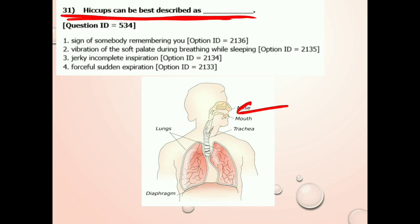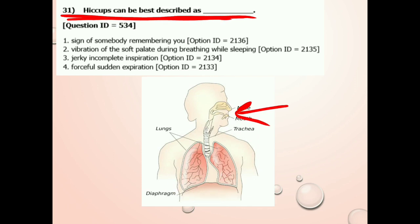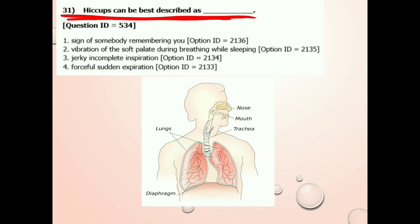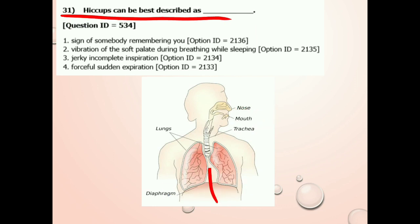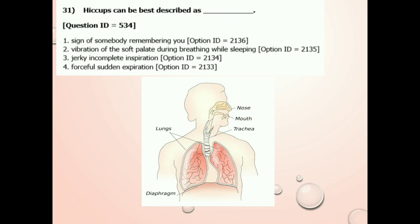This diaphragm is involved in inhalation and exhalation. When we inhale and breathe in, the diaphragm contracts — it moves down and pulls down — and air easily enters the lungs. During exhalation, this diaphragm will be relaxed and the air within the lungs will come out. This is the general process.